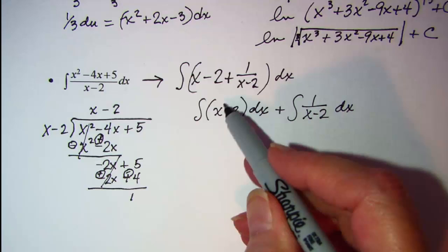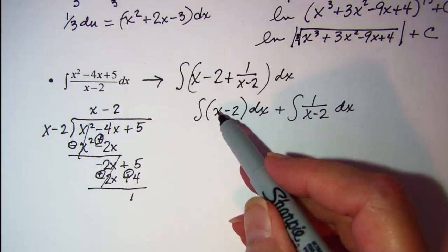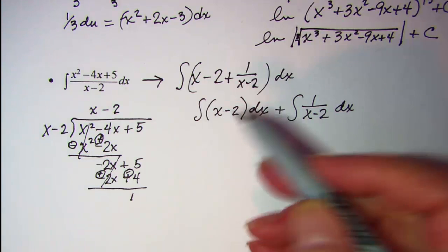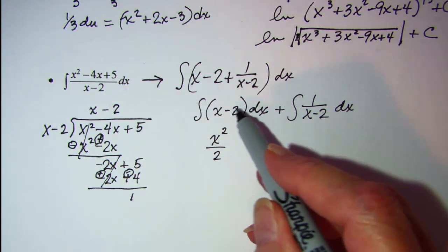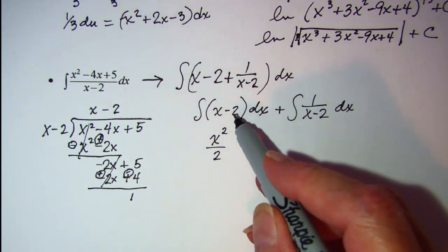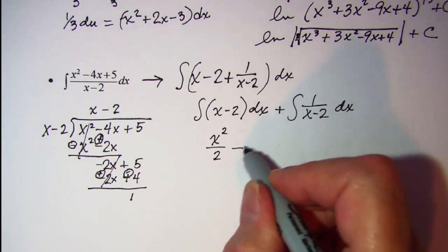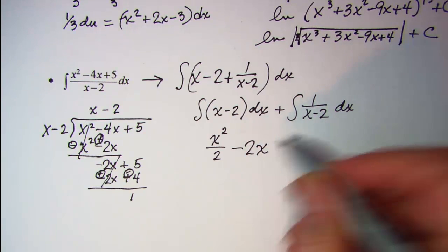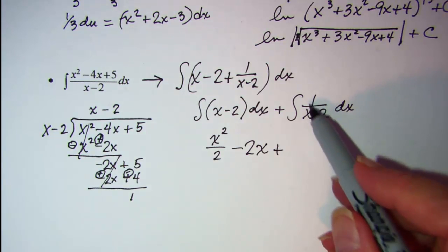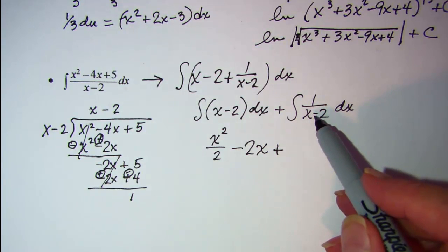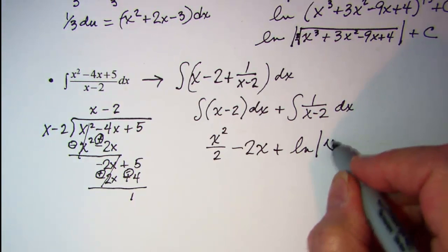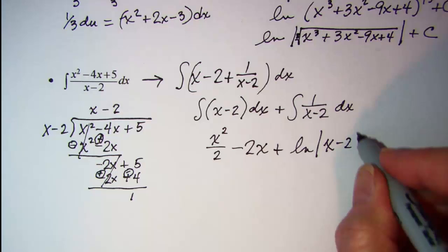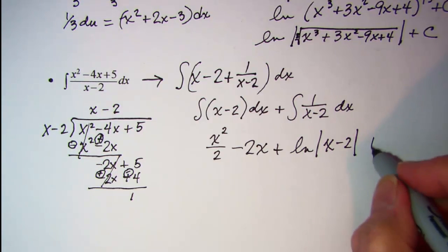Increase the exponent by 1 and divide by the new exponent, so this is x squared over 2. The integral of the constant will be negative 2x, and then this will be ln absolute value of x minus 2 plus a constant. There's nothing more we can do to simplify, so this is our answer.